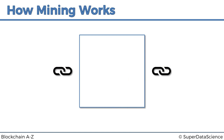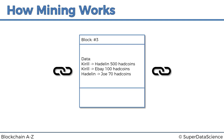The block has a couple of fields: the block number at the top, and some data. I've put in some fake data — 'sent Adlan 500 ad coins,' 'bought something on eBay for 100 ad coins,' and so on. Notice how I put not just one transaction into this block but several. A block doesn't store just one transaction — it stores multiple transactions, and then the blockchain moves on to the next block.